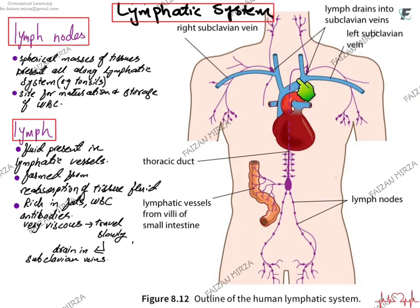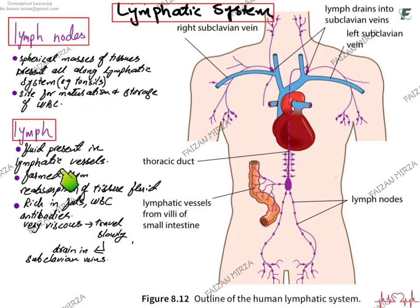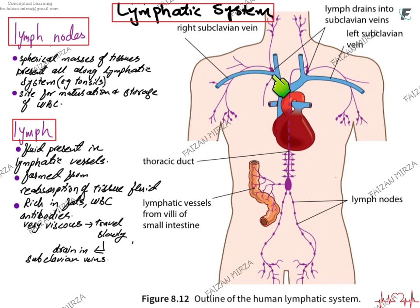At any given time, net outflow of tissue fluid exceeds net inflow, so excess tissue fluid accumulates. The lymphatic system handles this excess. Lymph nodes are spherical masses of tissue distributed along the lymphatic system — for example, tonsils in the throat — and are sites of maturation and storage of immune cells. Lymph is the fluid inside lymphatic vessels, formed by reabsorption of tissue fluid. It is rich in fat, immune cells, and antibodies, is viscous, travels slowly, and eventually drains into the subclavian veins, re-entering the bloodstream.